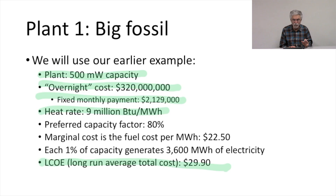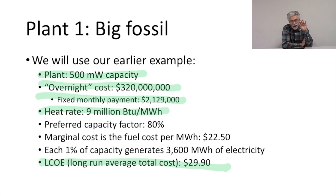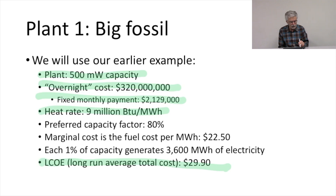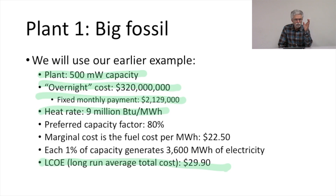This is a big base load power plant, and each 1% capacity will generate quite a lot of electricity. The long run average cost — the levelized cost of energy from this power plant — is $29.90. That is the average total cost of the power plant at the anticipated capacity factor. The levelized cost of energy is the long run average cost at the capacity factor we expect to have for this power plant — the average capacity factor over its lifetime.